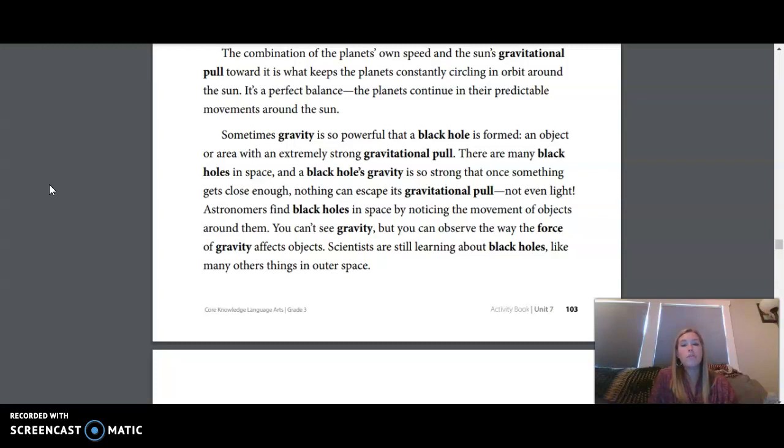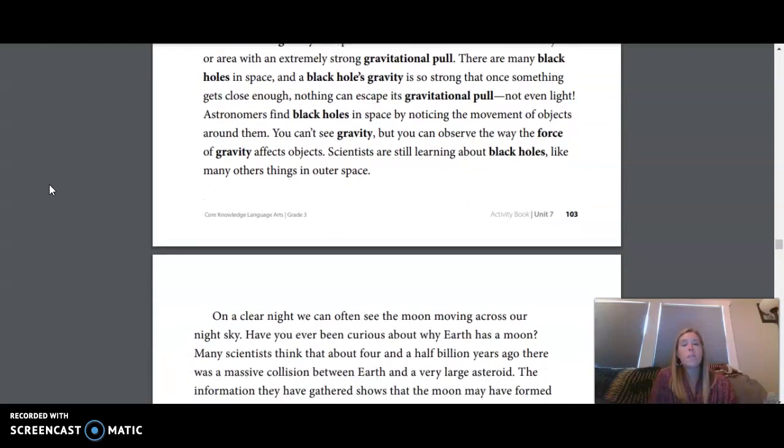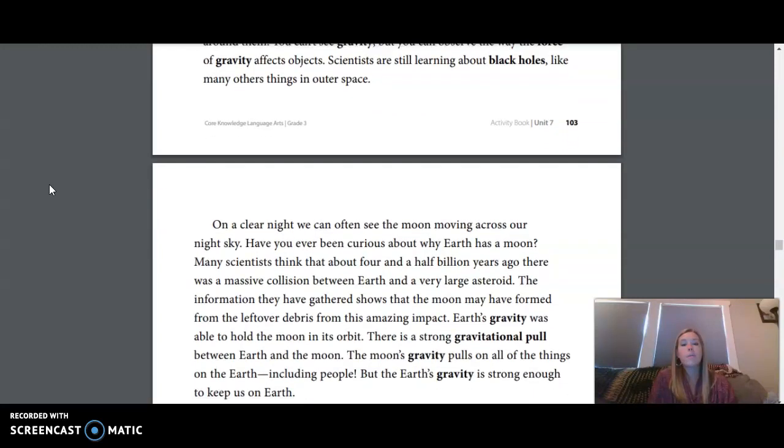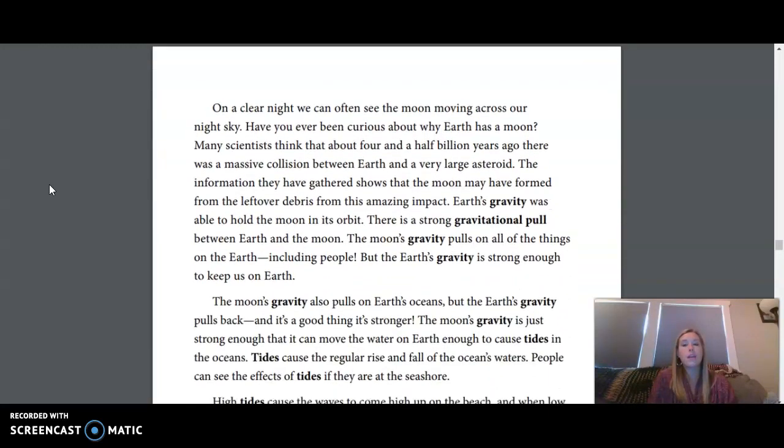Sometimes gravity is so powerful that a black hole has formed an object or area with an extremely strong gravitational pull. There are many black holes in space, and a black hole's gravity is so strong that once something gets close enough, nothing can escape its gravitational pull, not even light. Astronomers find black holes in space by noticing the movements of objects around them. You can't see gravity, but you can observe the way the force of gravity affects objects. Scientists are still learning about black holes, like many other things in outer space.